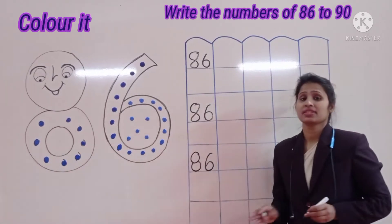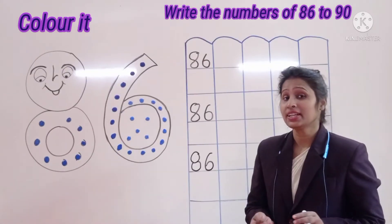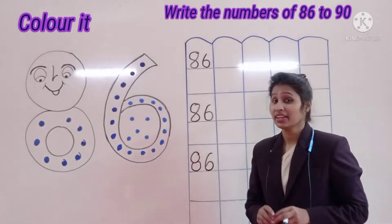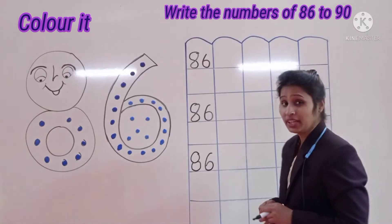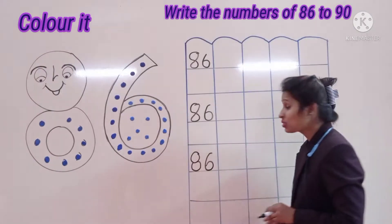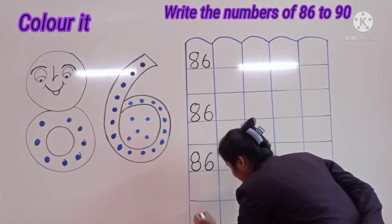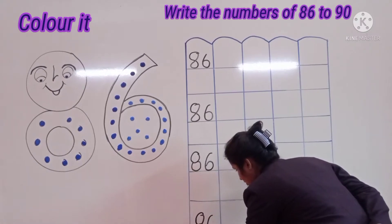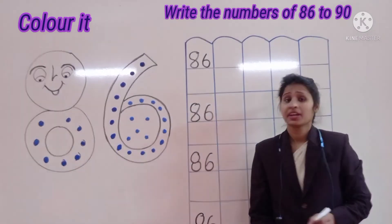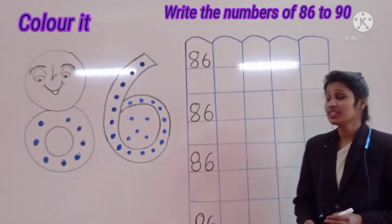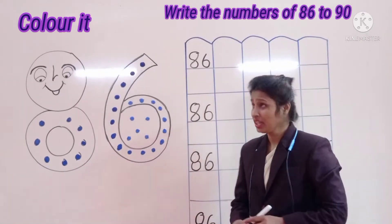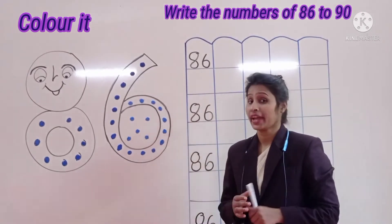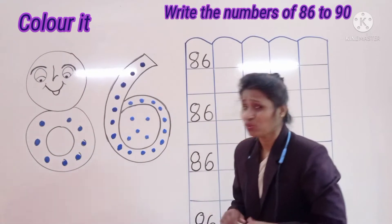Which number is this? This is number 86. 8, 6 — 86. Now right one, 8, 6 — 86. The first row completely. Now sharing right also. My lovely kids, what comes after 86?